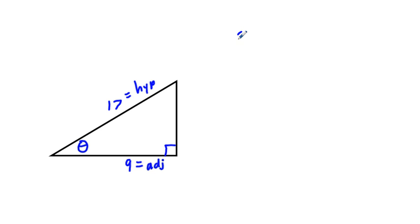So our cosine of this angle theta is equal to our adjacent side, which is 9, over our hypotenuse, which is 17. So our theta itself is going to be equal to the inverse cosine of this fraction 9/17.